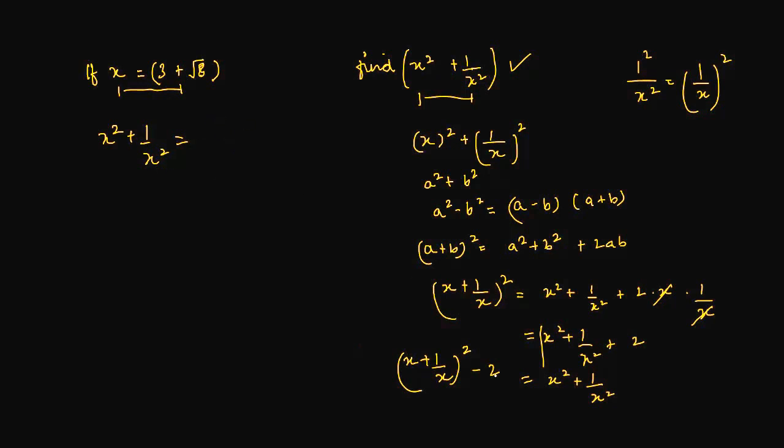Now, x square plus 1 upon x square can be written as x plus 1 upon x whole square minus 2. Now, x we know is 3 plus root 8, plus shall we find out what is the value of 1 upon x?